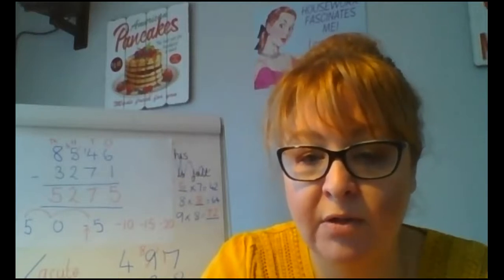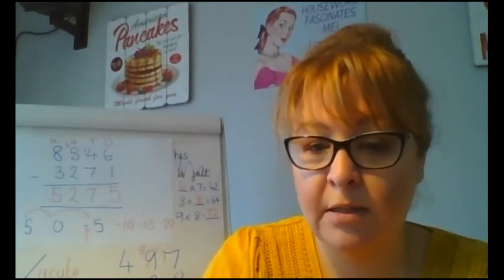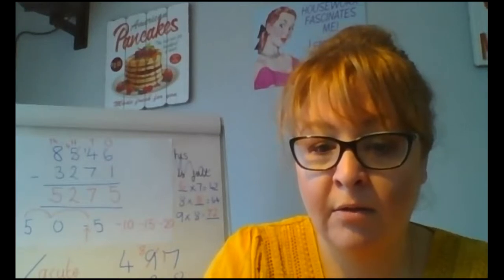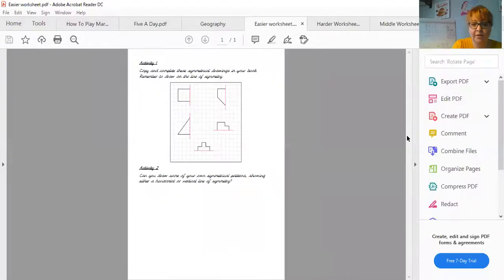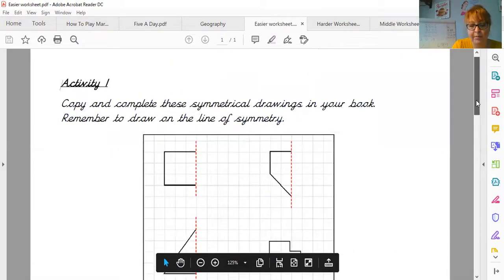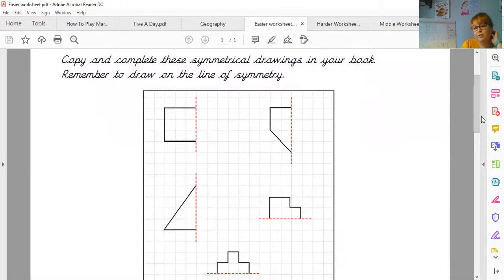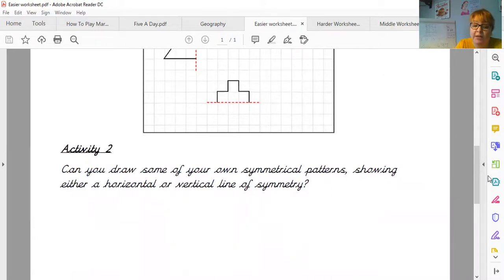So you can see that the easier worksheet looks like this one. And what you need to do is you can do it on the sheet should you wish to. But it does say we would have copied it into our book so that we could practice that skill of drawing the shapes as well. So you can see that across the mirror line, you need to copy the shape on the other side exactly as it would look in a reflection. So you could do those ones on the sheet, cut that out and stick that in your home learning book. And then it says activity two, can you draw some of your own symmetrical patterns showing either a horizontal or vertical line of symmetry? So that's doing your own pattern.